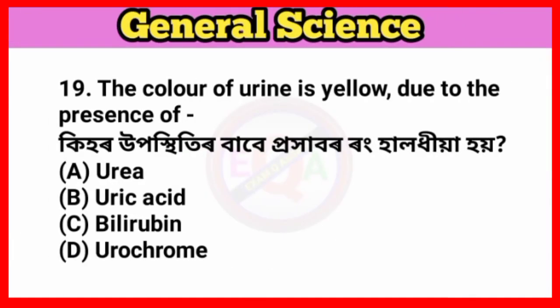Question number nineteen: The color of urine is yellow due to the presence of which substance? Answer option D: Urochrome. It is because of urochrome that urine appears yellow.